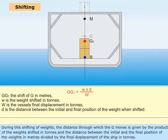During this shifting of weight, the distance through which G moves is given by the product of the weights shifted in tons and the distance between the initial and the final positions of the weights in meters, divided by the final displacement of the ship in tons.